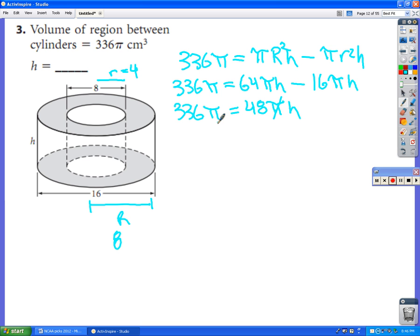And so the π's cancel. Divide both sides by 48. So our height there is 7 centimeters.